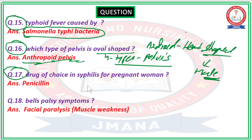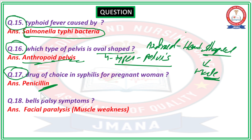Question number 17: Drug of choice for syphilis in a pregnant woman. The drug of choice differs between a non-pregnant adult and a pregnant woman. In pregnancy, the right answer is penicillin. This question was asked in both the MPCA exam and the PGI Rohtak exam on 17 April.